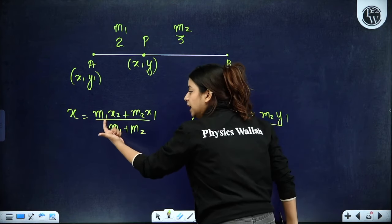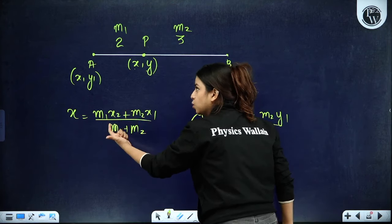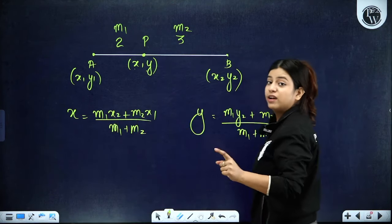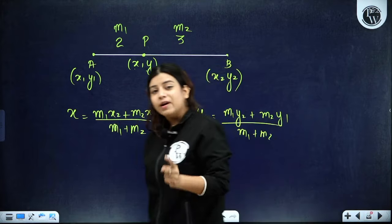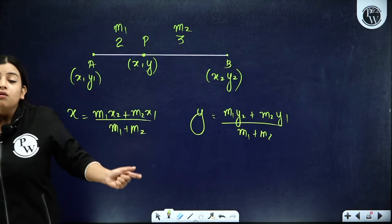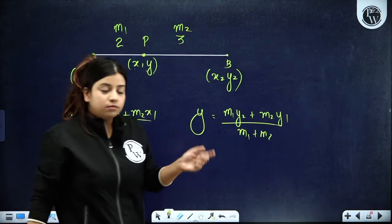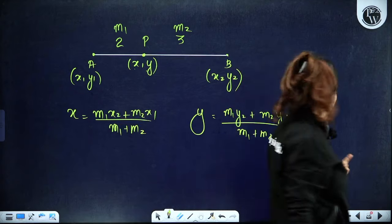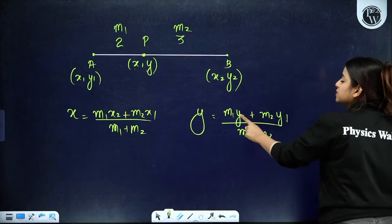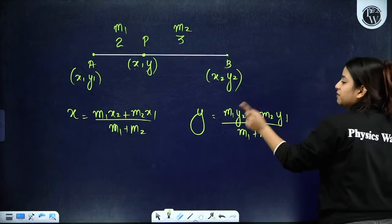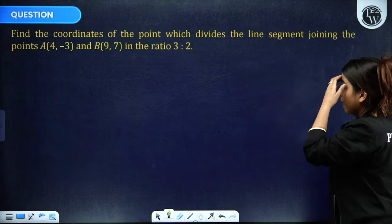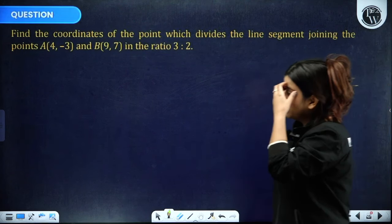To remember: where there is m1, pair it with x2 and y2; where there is m2, pair it with x1 and y1. The subscripts alternate: m1 with 2, m2 with 1.